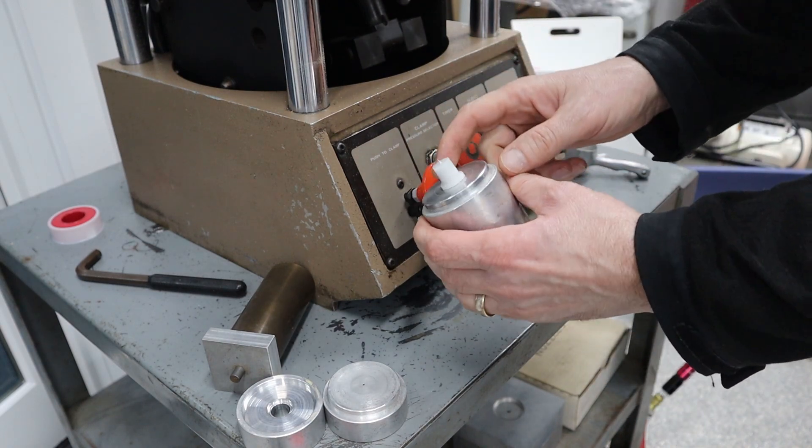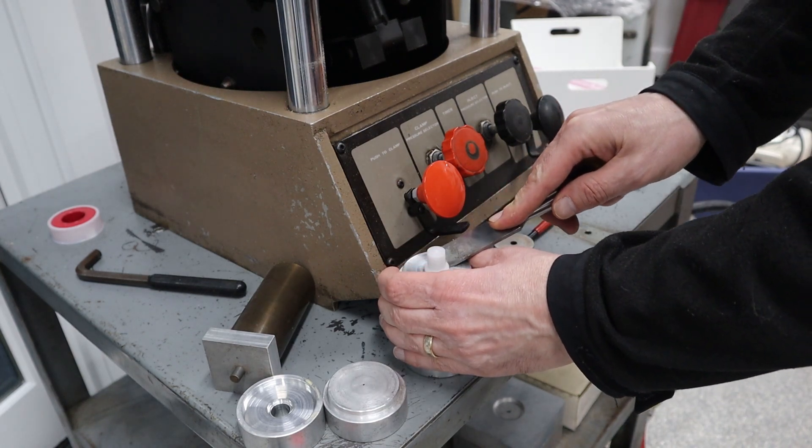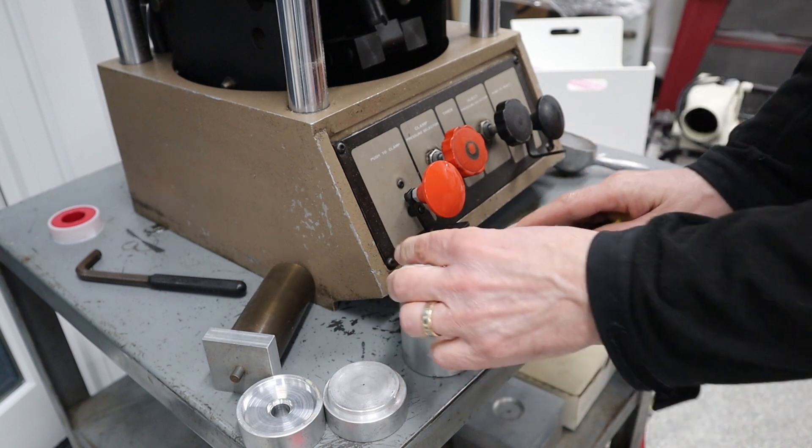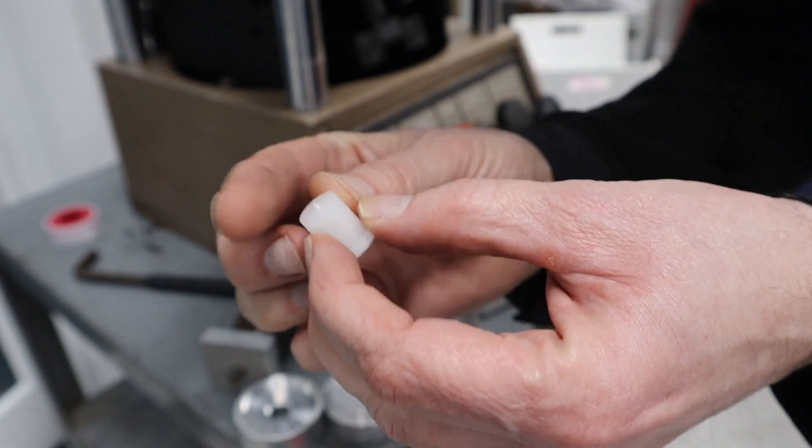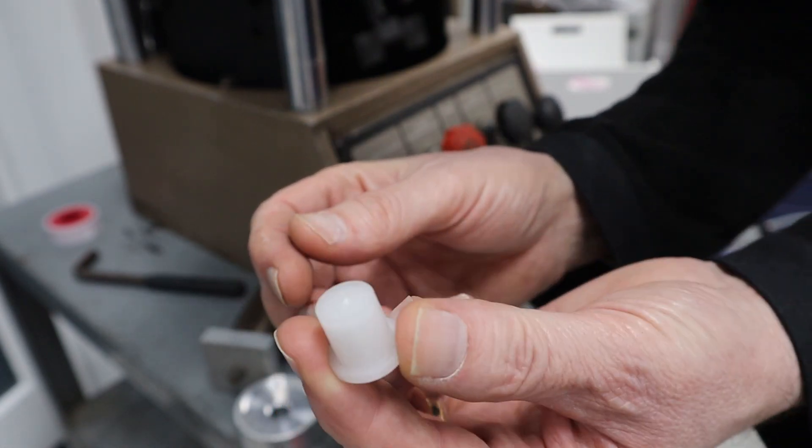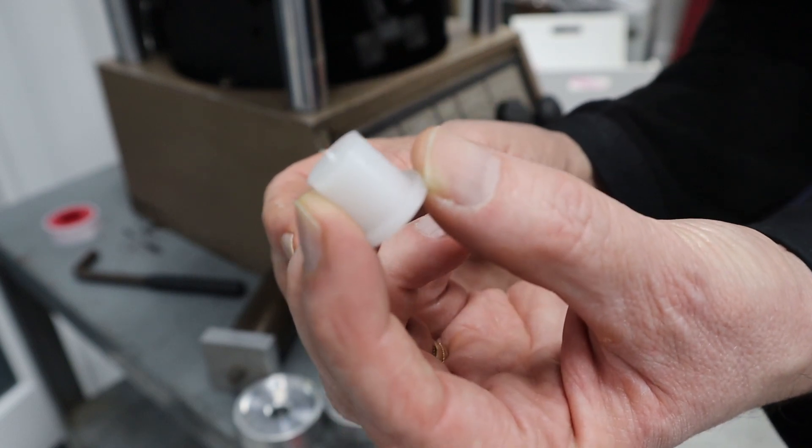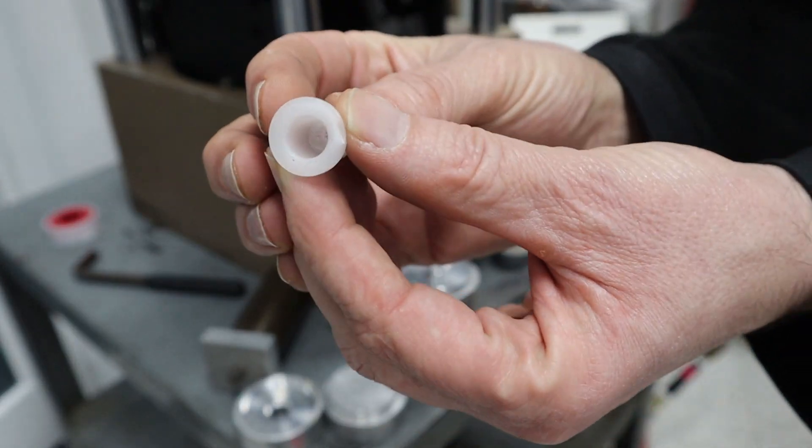And let me get something to pry that off. And let's see how this did. Okay, first part from my Morgan. So that means now it's time for me to learn how to actually design some molds for this and make some parts for real. But that's pretty cool.